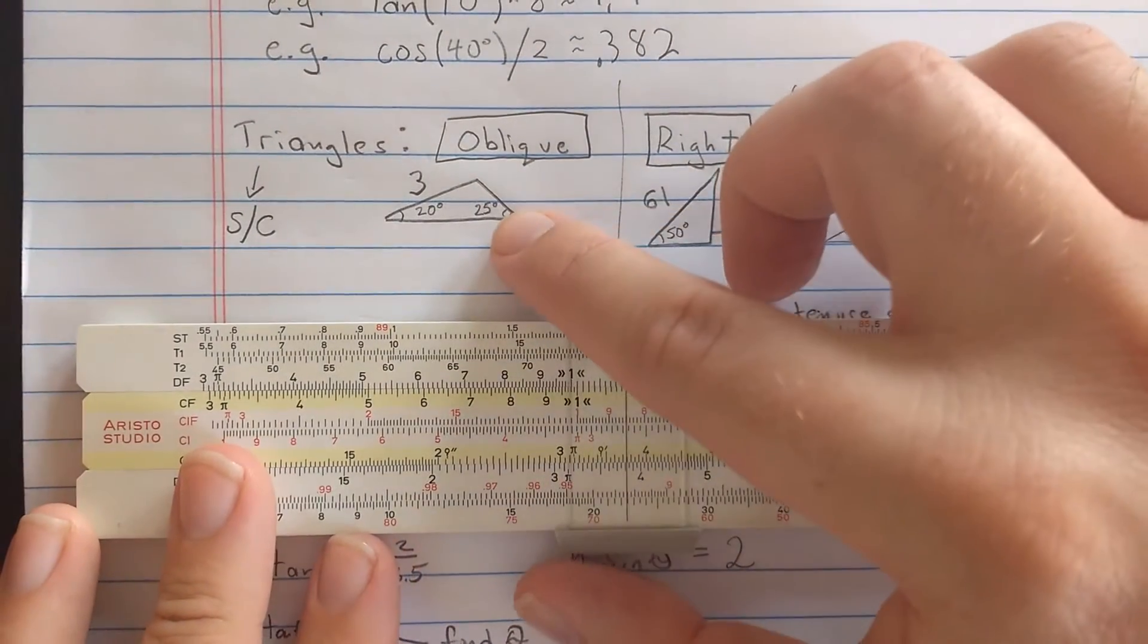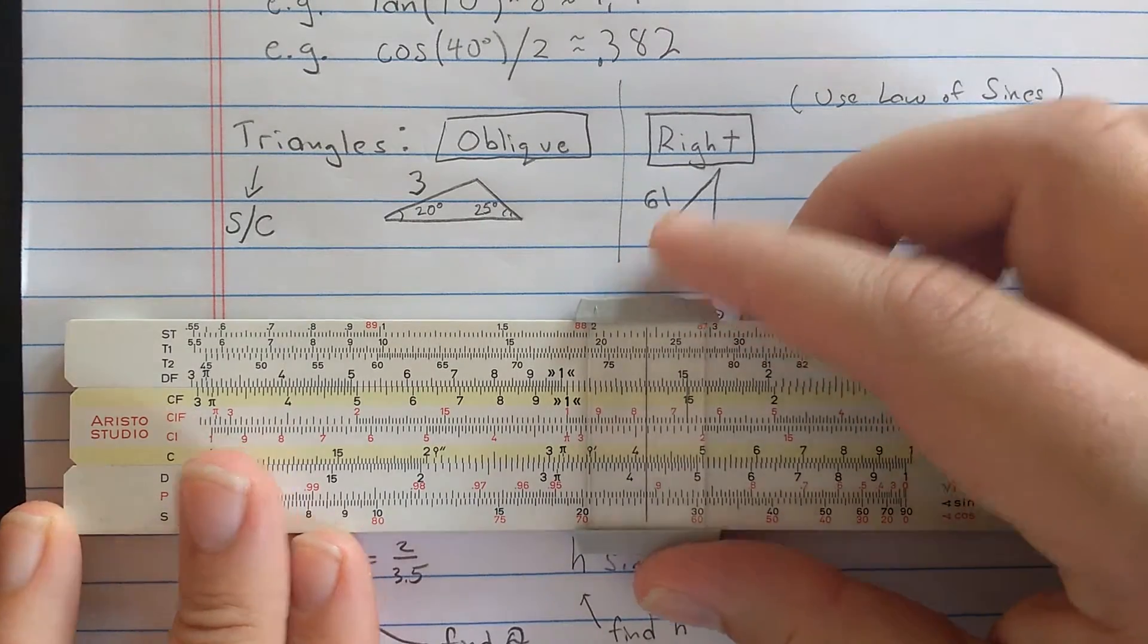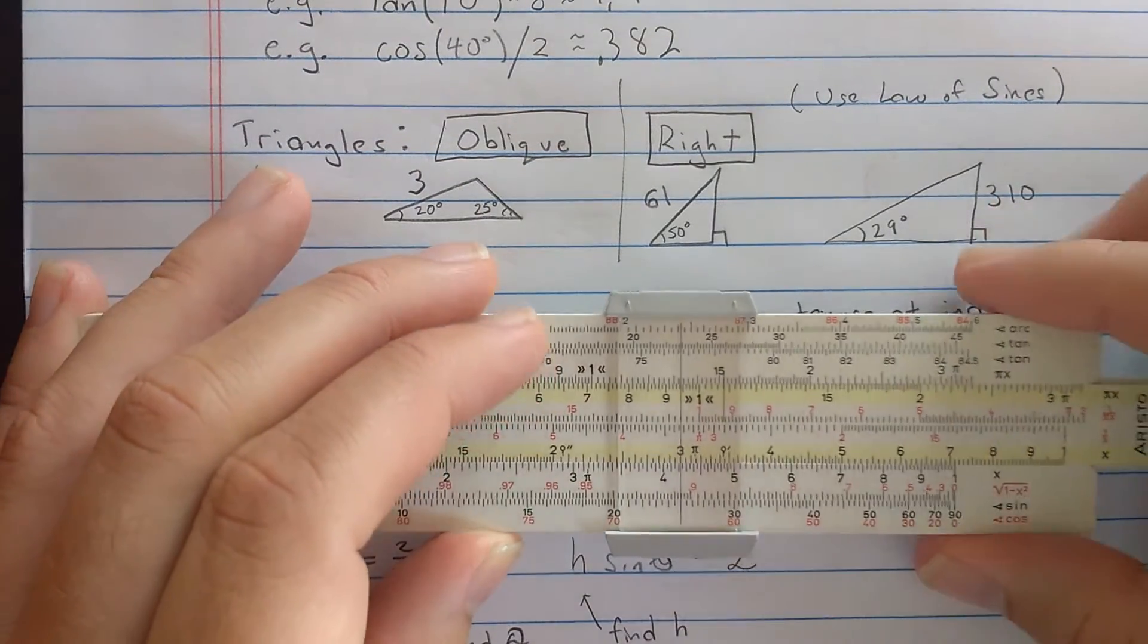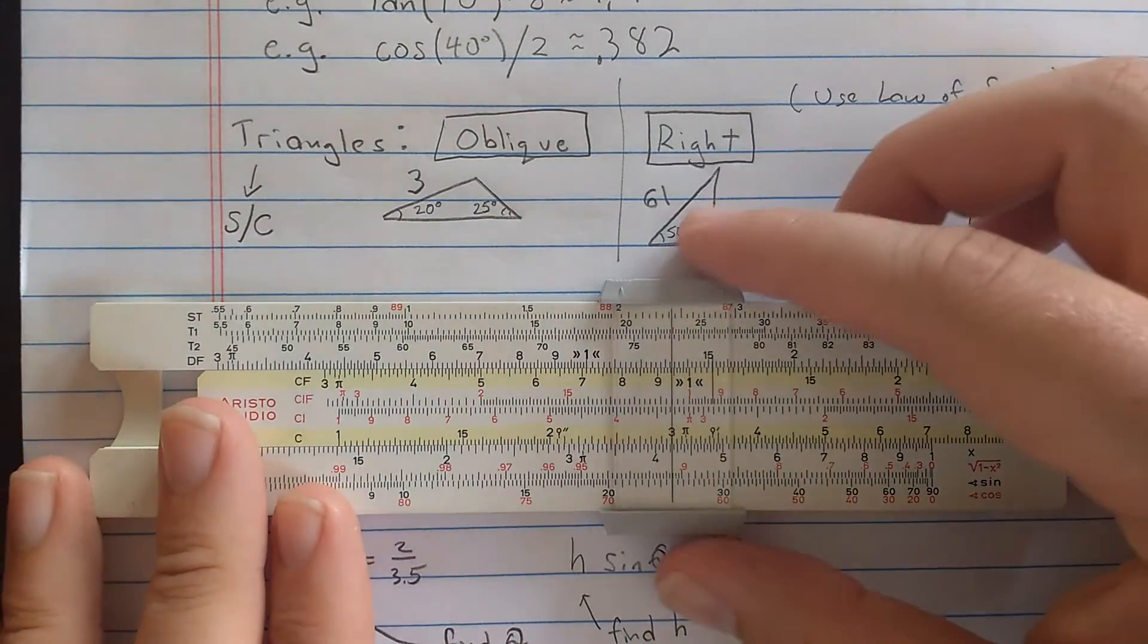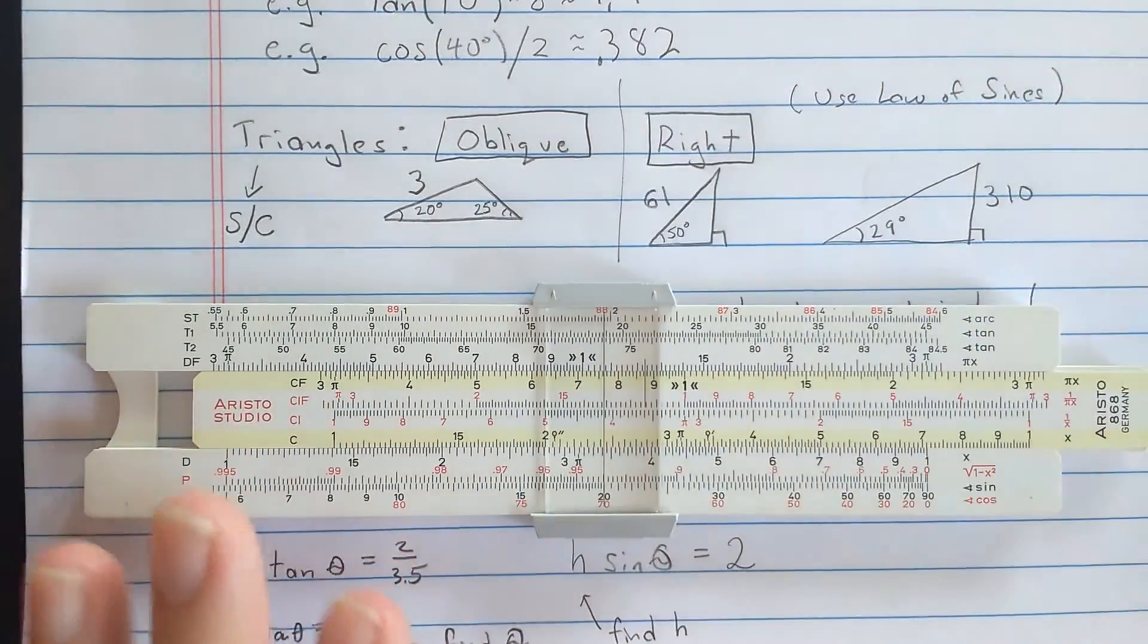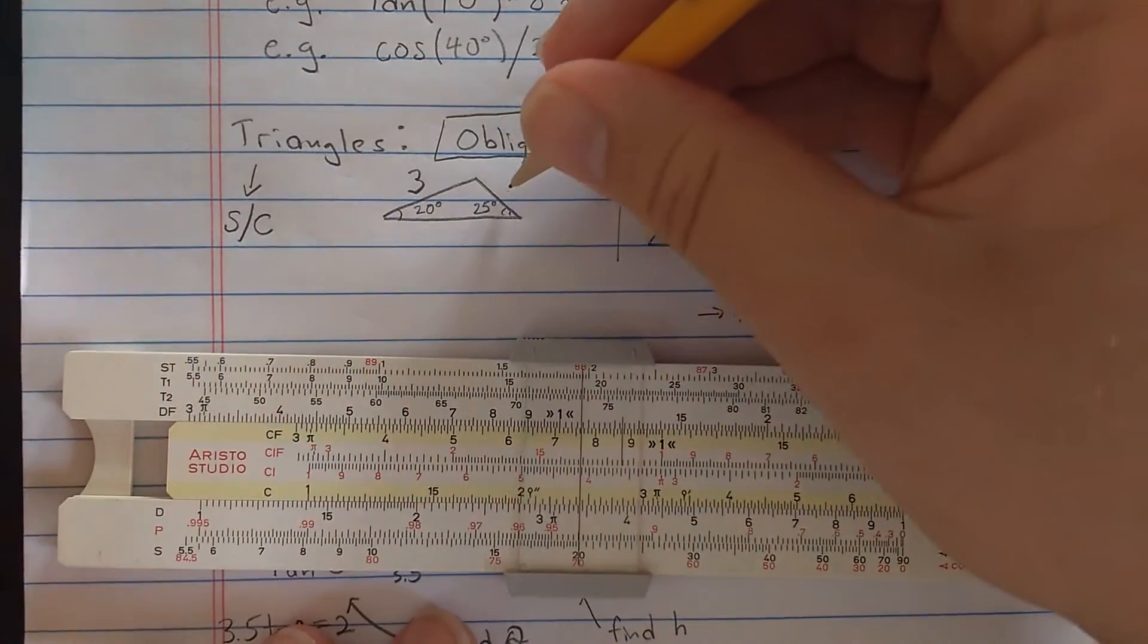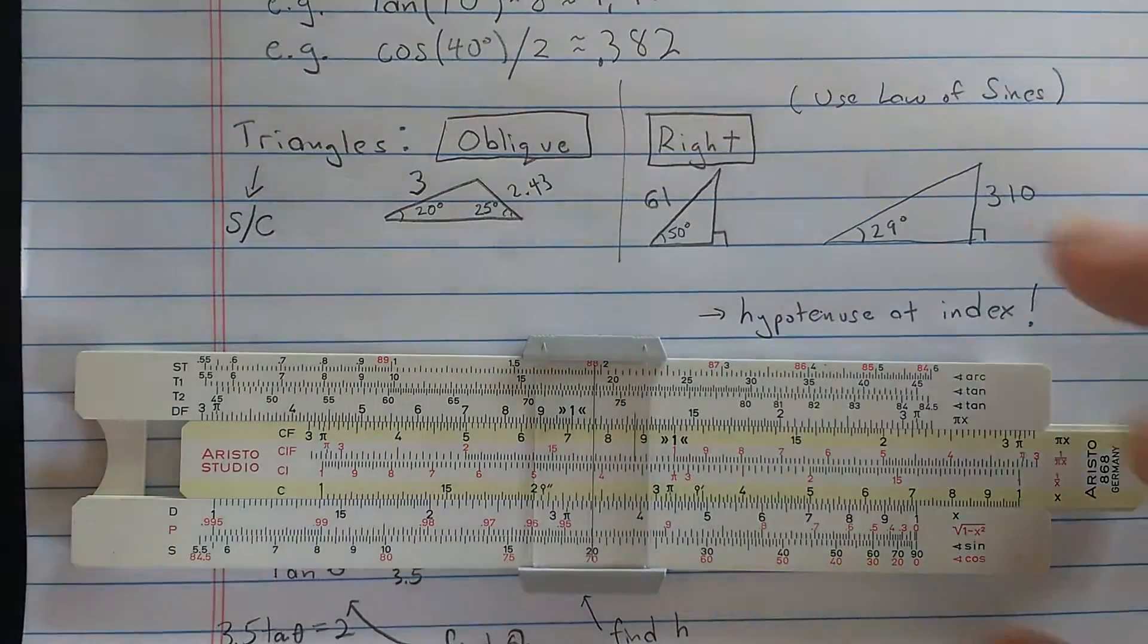So let's find 25 degrees. And across from that, we know side length 3. So I'll align that sine of 25 degrees with 3 on the C scale, which is highlighted in yellow. Then all I need to do is come out to 20 degrees on the S scale, a little bit to the left. And then I look back up at the C scale, and I see that's about 2.4. 2.4. Let's go with 3. Using the law of sines.